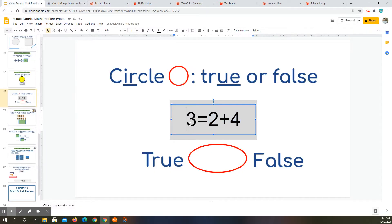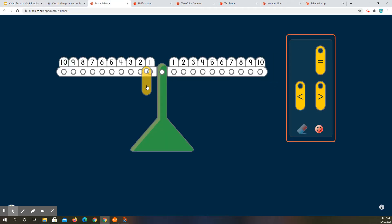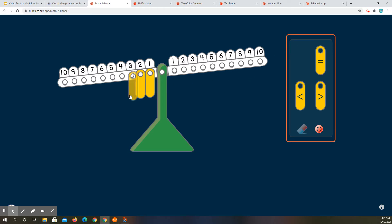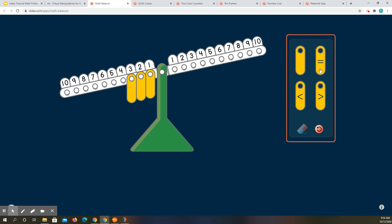So I have 3 on this side. So let me put 1, 2, 3. And then my equal sign is going to go right here because both sides need to be equal for the equation to be true.